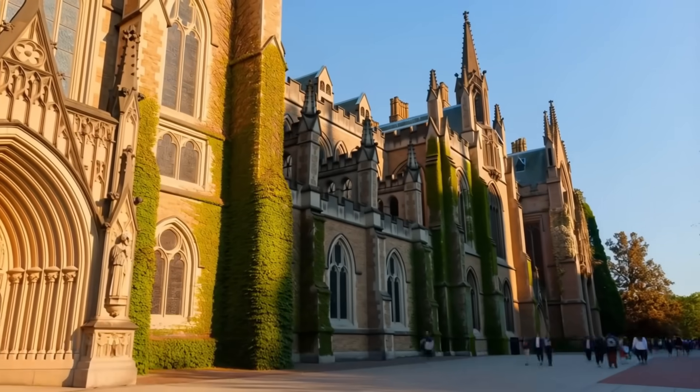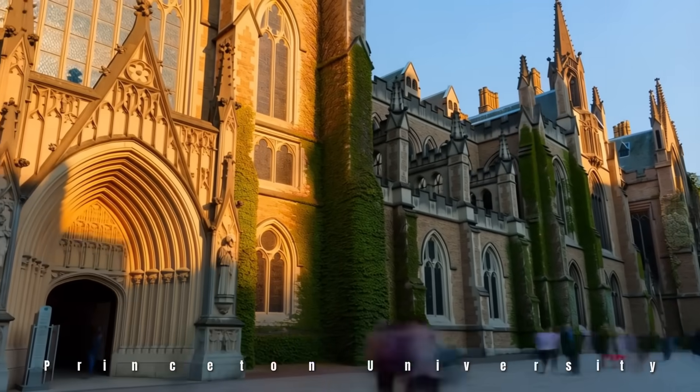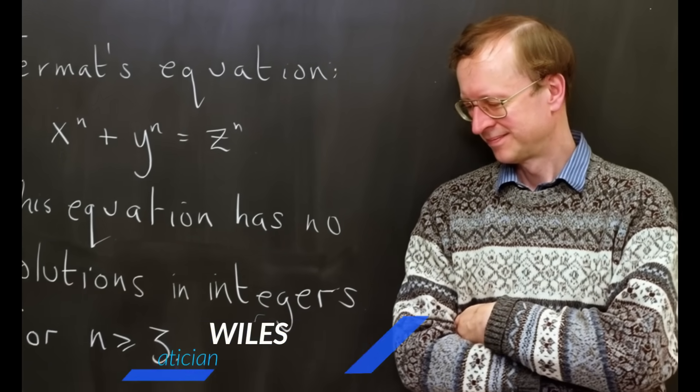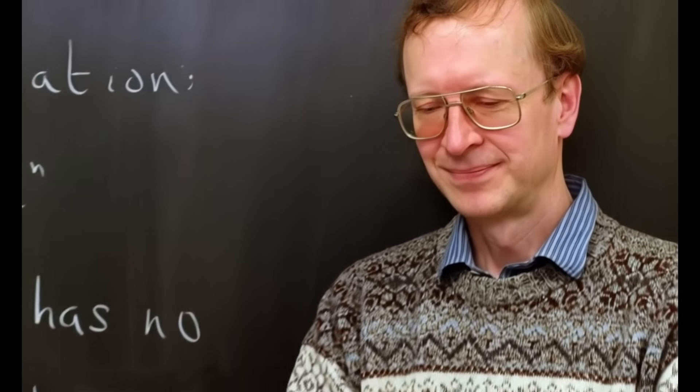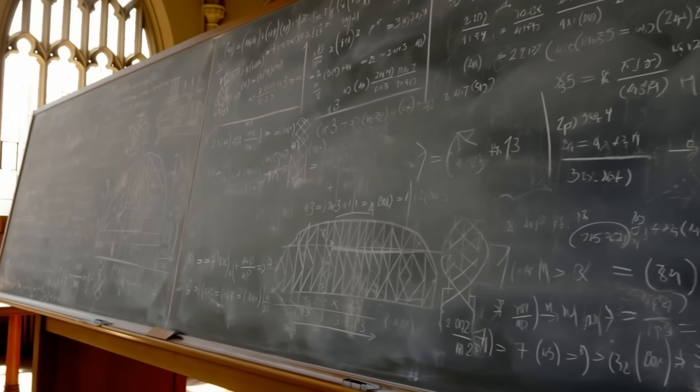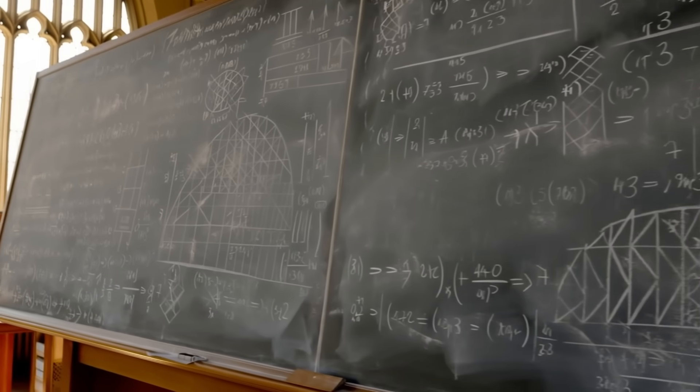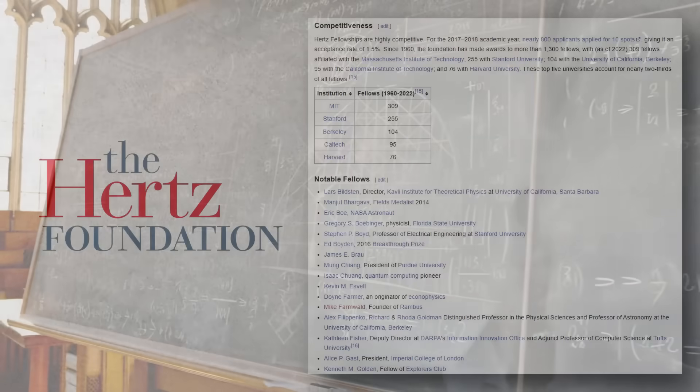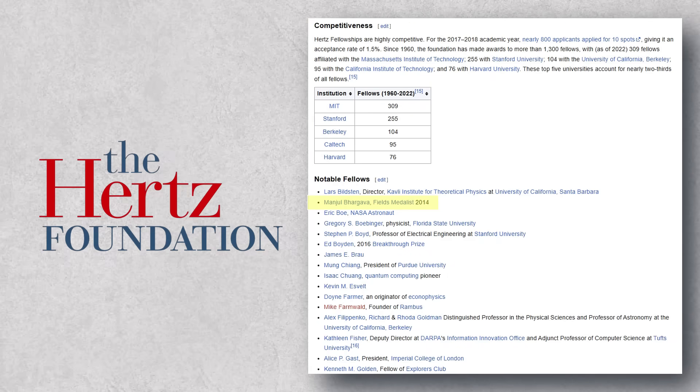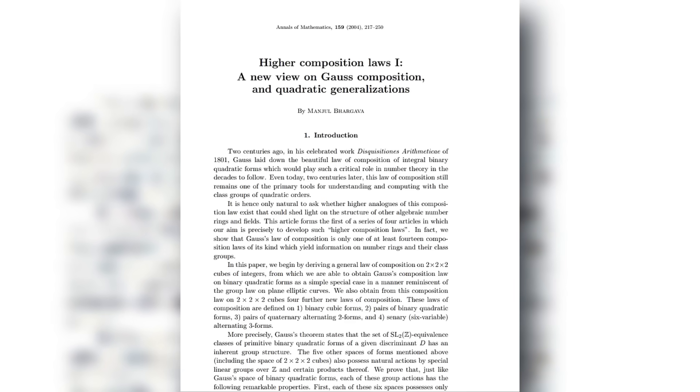He heads to Princeton University for his PhD, entering one of the world's strongest mathematical ecosystems. There, he studies under a living legend, Sir Andrew Wiles, the man who cracked Fermat's last theorem after centuries of failed attempts. Under Wiles' mentorship, Manjul finds both challenge and freedom. Challenge in the towering complexity of number theory, and freedom to rethink the field from its foundations. Supported by the ultra-competitive Hertz Fellowship, Manjul has the space, and the pressure, to attempt something bold. And in 2001, that bold attempt arrives.